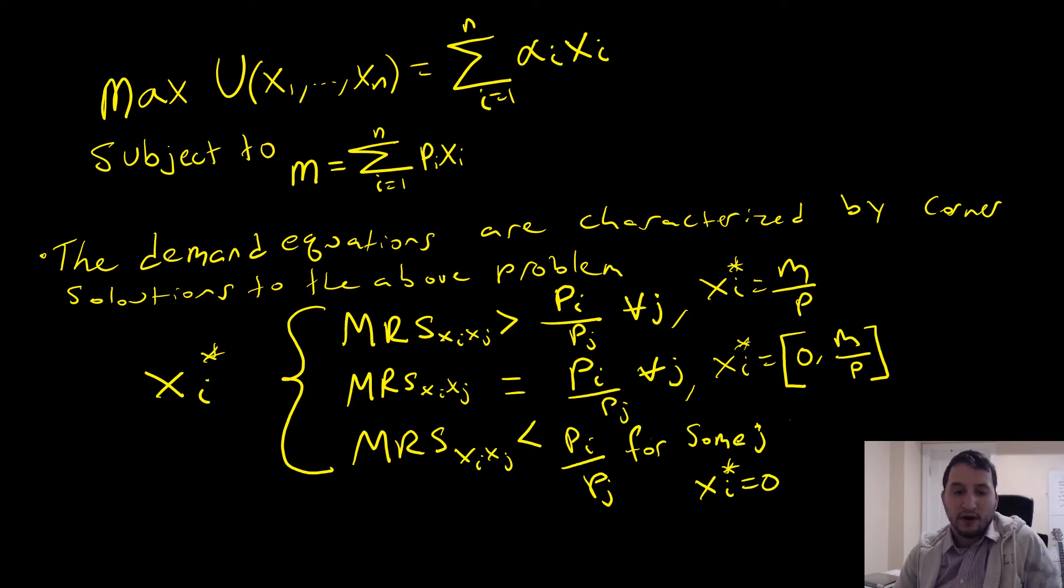As follows: if our marginal rate of substitution between x_i and x_j is greater than the price ratio of good i and good j (p_i over p_j) for every j, then we put all our income on good i.